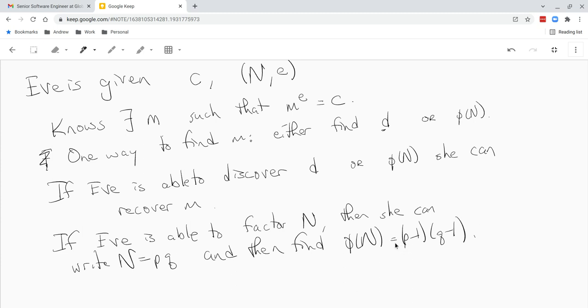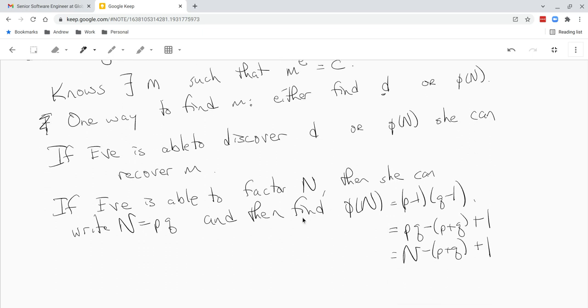Conversely, it turns out if she knows phi of n, she can compute the factorization of n if she knows n, right? Because phi of n is just pq minus p plus q plus 1. So that's just n minus p plus q plus 1. So if she knows phi of n, she knows p plus q, and she also knows p times q. Well, therefore, she also knows p and q.